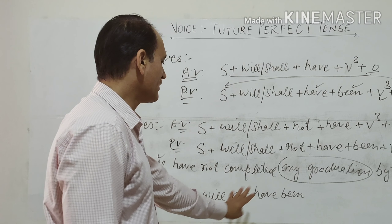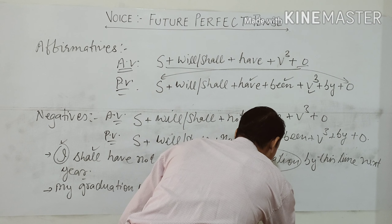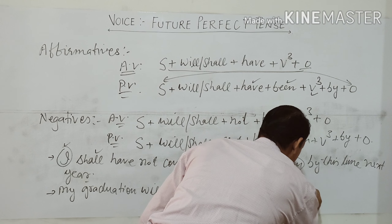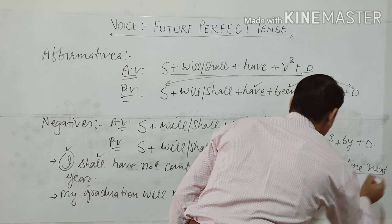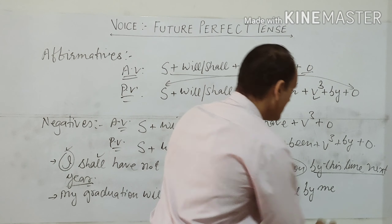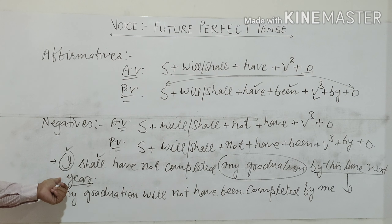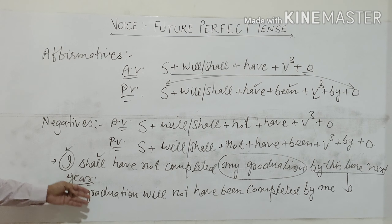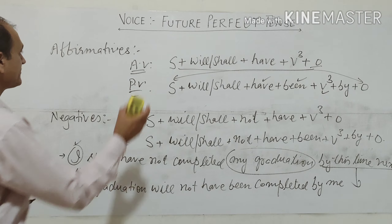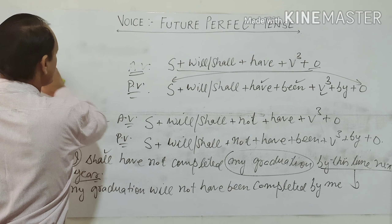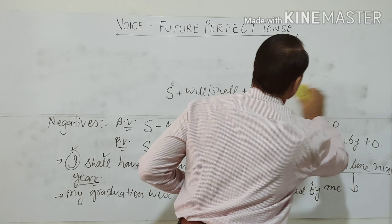So the full negative passive sentence becomes: My graduation will not have been completed by me by this time next year. This is the passive voice of the negative structure. Now we will do the last structure for future perfect tense and see how the changes happen.